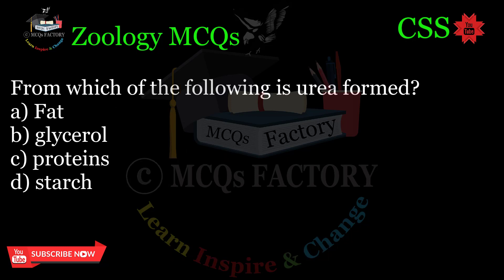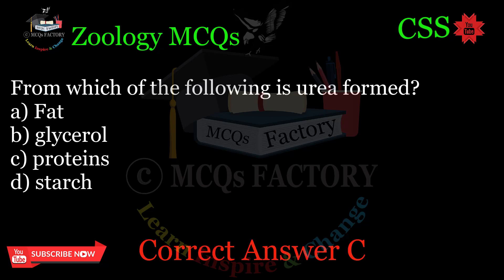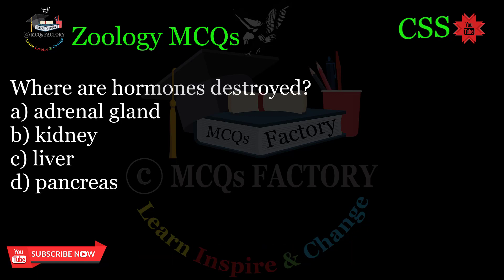From which of the following is urea formed? A. Fat. B. Glycerol. C. Proteins. D. Starch. Correct answer: C.